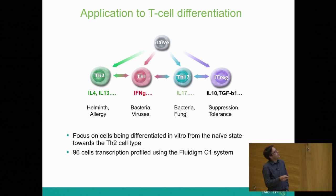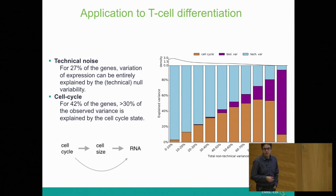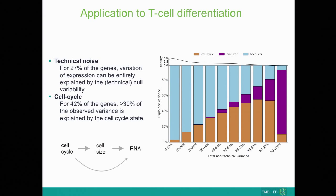Going back to the T cell differentiation example: one of the surprising answers is that the cell cycle explains a lot of variability. Ordering genes by the proportion of variance due to non-technical variation, whenever there is non-technical variation, the cell cycle is the dominant orange component. To put numbers on this: more than 40% of genes have the cell cycle driving 30% or more of their variation. Compared to the biological variation of interest, the ratio is much worse — cell cycle is a dominant driver of heterogeneity in these cell populations.